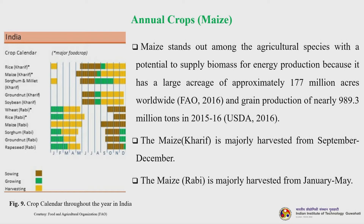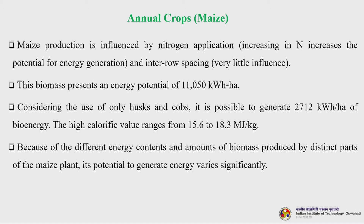Maize is a Kharif crop majorly harvested September to December, and Rabi maize is harvested January to May — in India we cultivate twice annually. The crop calendar shows sowing, growing, and harvesting phases. Maize production is influenced by nitrogen application: increasing nitrogen increases the potential for energy generation. This biomass presents an energy potential of 11,050 kilowatt-hours per hectare. Considering only husks and cobs, it is possible to generate 2,712 kilowatt-hours per hectare of bioenergy. The high calorific value ranges from 15.6 to 18.3 megajoules per kg.